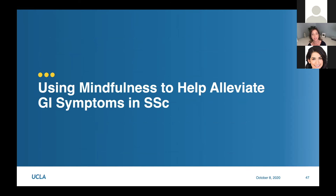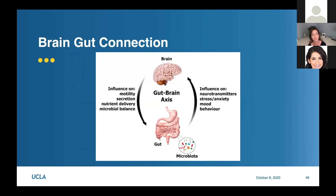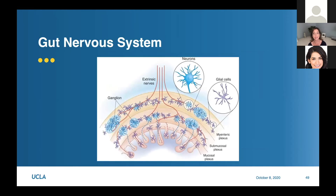The last part of this talk is about mindfulness and how I've found it helpful in reducing symptoms in patients with scleroderma. There is a real brain-gut connection - the same type of neurons and glial cells found in your brain also exist in your gut. When you eat, you want to make sure this nervous system is in a calm state - what we call the parasympathetic state - because this is the state where you digest things better.